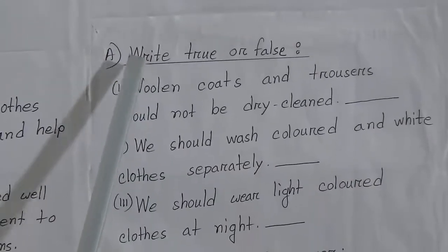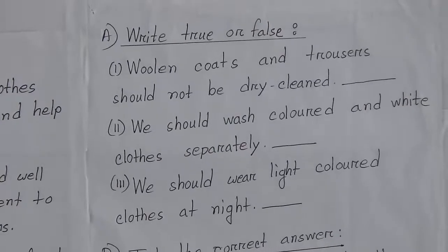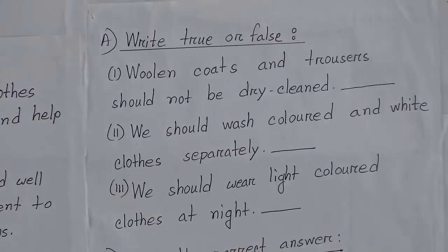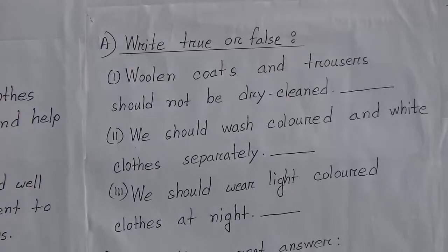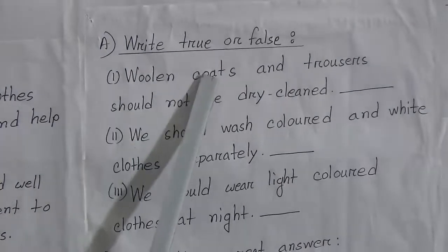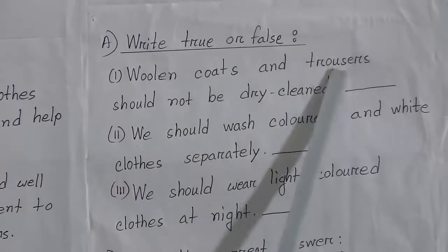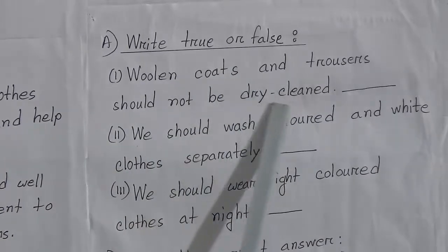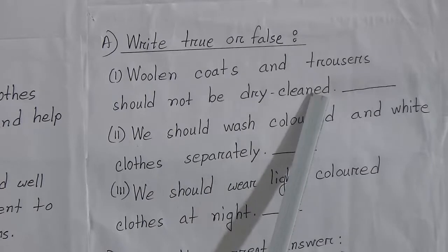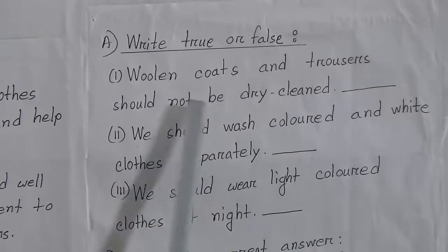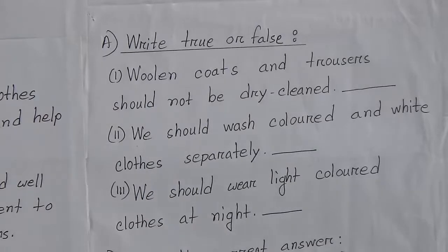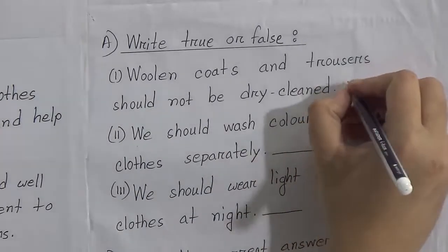Dear students, we will do some exercises. Our first exercise is: Write True or False. If the statement is true, write true; if it is false, write false. Number one: Woolen coats and trousers should not be dry cleaned. This statement is false — woolen coats and trousers should be dry cleaned. So we will write false.